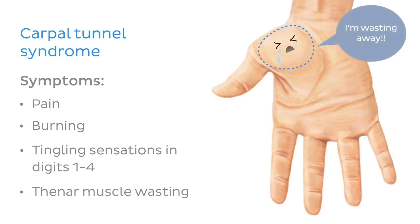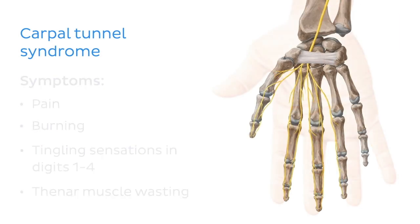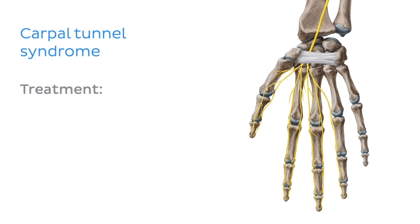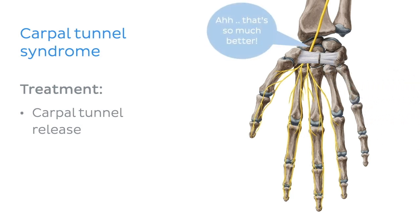The syndrome worsens over time and often surgery is needed to fully alleviate the symptoms. This can be done through a procedure called carpal tunnel release, where the flexor retinaculum is cut to relieve the pressure on the median nerve.